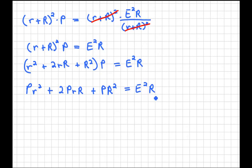So, we're trying to solve for R. So, I'm going to get everything set equal to zero, because you want to think of this as a quadratic equation. So, I'm going to subtract an E squared R from both sides. So, we've got P lowercase r squared plus 2Pr capital R plus P capital R squared minus E squared r equals zero.